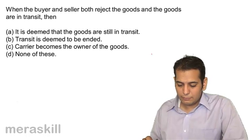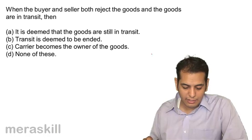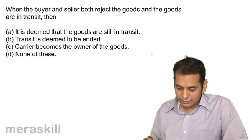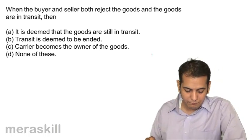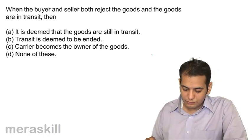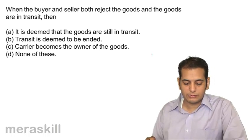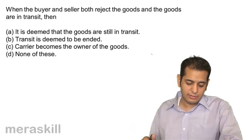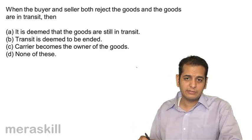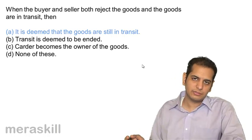Next: When both the buyer and seller reject the goods and the goods are in transit, then (a) it is deemed that the goods are still in transit, (b) transit is deemed to be ended, (c) carrier becomes the owner of goods, (d) none of these. When both refuse to take delivery, it will be deemed that the goods are still in transit.